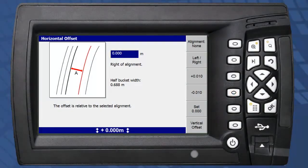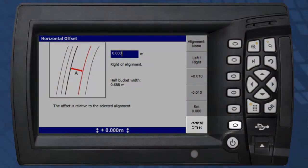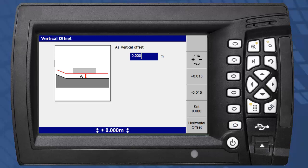Toggle between horizontal and vertical offset options can be done with the soft key option. Vertical offsets will allow the operator to raise or lower the design surface by a specific value. For example, an operator can lower a finish level design to allow for pavement depth, or raise a design to allow for compaction.